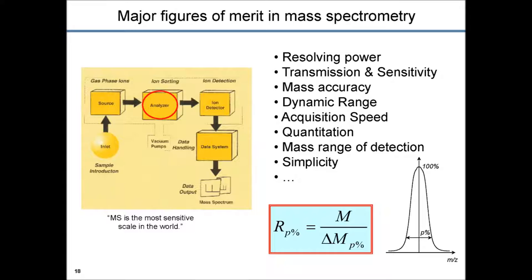Even though a modern mass spectrometer looks a little more complicated than 100 years ago, we still see the same three major building blocks: source, analyzer, and ion detector, but we also have a data system for data processing. The analyzer is still half of the mass spectrometer. An analyzer is characterized by a number of key analytical figures of merit: first of course is resolving power, but then transmission which turns into sensitivity, mass accuracy, dynamic range, acquisition speed, quantitation capability, mass range of detection, and last but not least, simplicity.